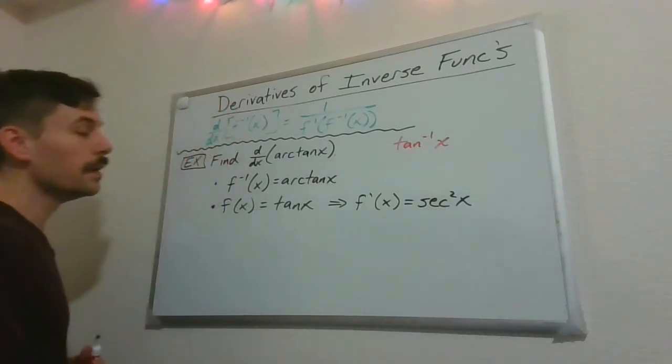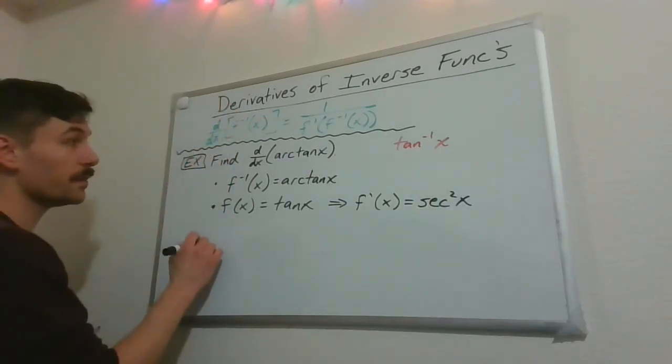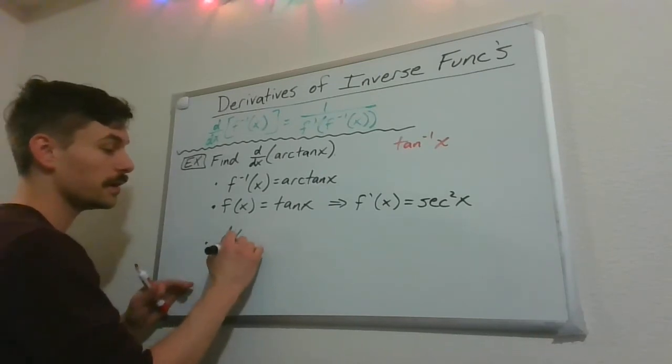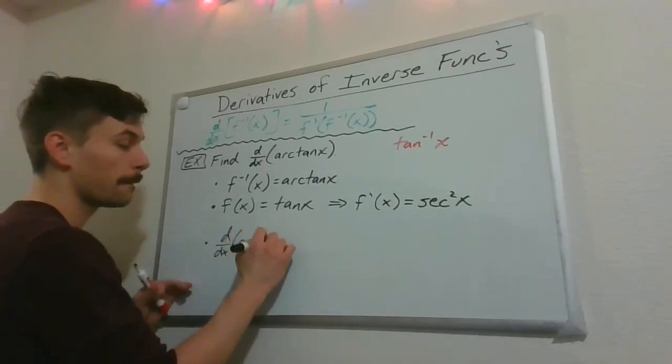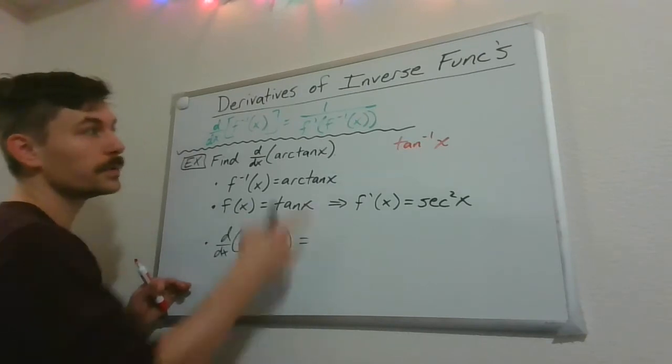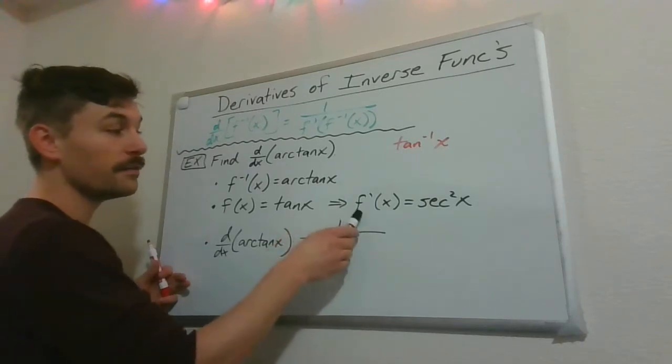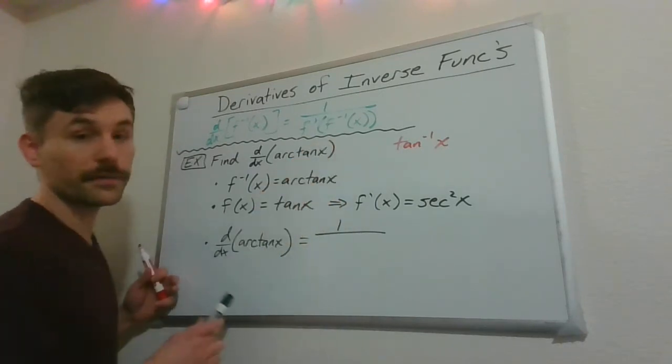So to find the derivative we're actually interested in, the derivative of arctan, we just go back to our formula here. We say, okay, it's one over f prime of f inverse.